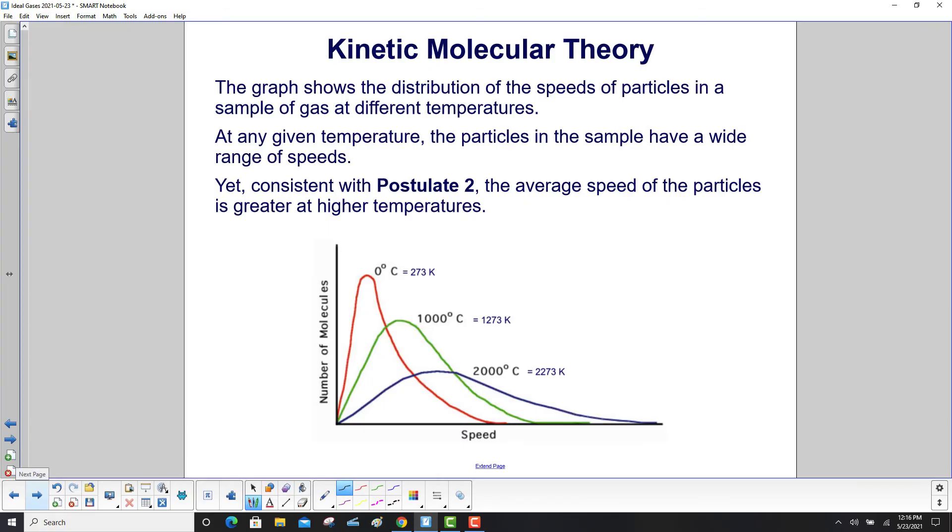The graph shows the distribution of the speeds of particles in a sample of gas at different temperatures. So over here, that's at 0 Celsius. The graph comes up like this, and then fades out like that. And notice, as the temperature increases, the graph shifts over to the right.